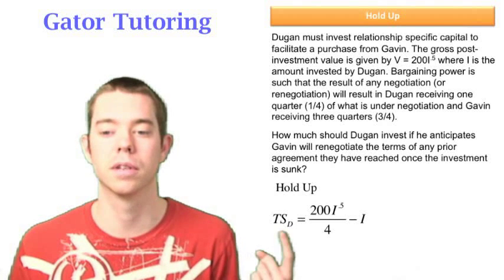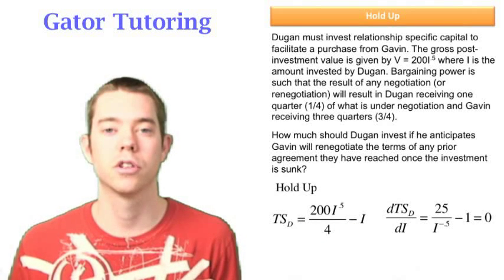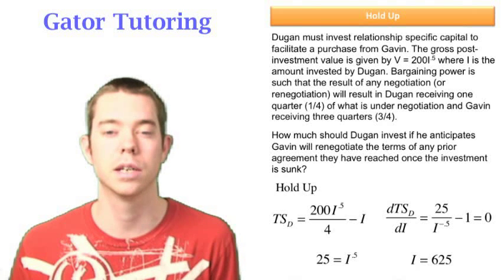So the total surplus for Dugan is going to be the value divided by four minus the investment not divided by four. We take the derivative with respect to I, set it equal to zero, and solve for this case I to be equal to 625.